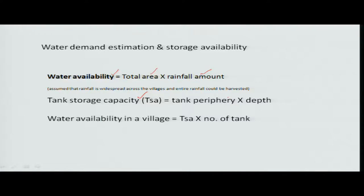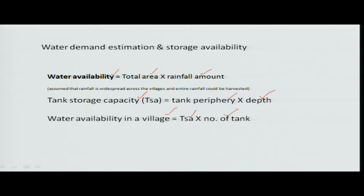For storage estimation, the tank periphery area as well as depth is needed. If we want to estimate water availability in a village, we need to know the tank storage capacity and the number of tanks in the area. This will tell us how much of a given rainfall amount the villagers themselves can store and use at a later date when there is a requirement. If water is only running off, you cannot hold on to that system.